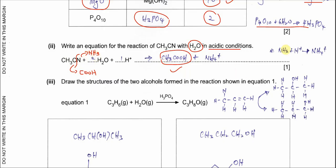Because there is an acid present, the ammonia (being a base) will gain a proton to form ammonium. So the other product is ammonium, not ammonia. Once you have this, balance the equation: it needs two H₂O and one H⁺ to form these two products.